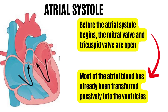Cardiac cycle is defined as the period from the beginning of one cardiac contraction to the beginning of the next cardiac contraction. For a normal heart rate of 75 beats per minute, the duration of each cardiac cycle is 0.8 seconds. I divide the cardiac cycle into four phases: atrial systole, atrial diastole, ventricular systole, and ventricular diastole.